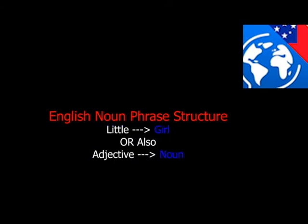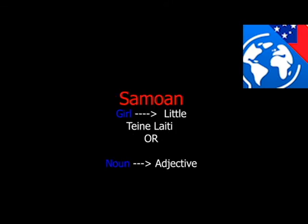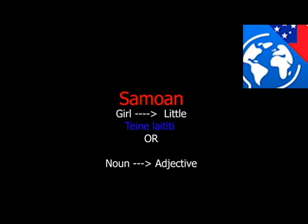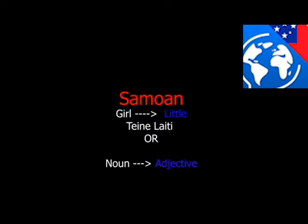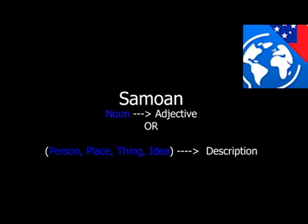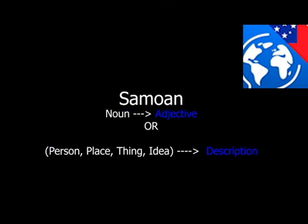In Samoan, the structure is the opposite. Instead of 'little girl,' it would be 'girl little,' or 'teine laikiki.' That would be the noun first, and then the adjective — the person, place, or thing, and then the description.